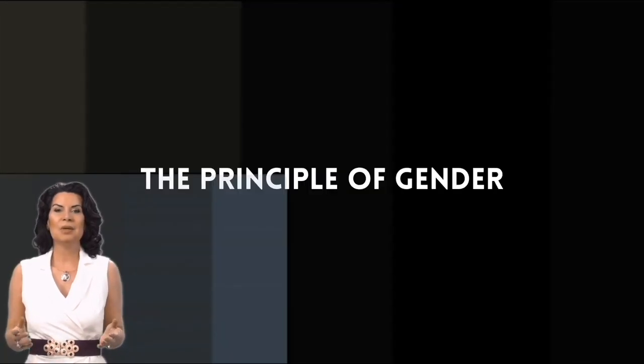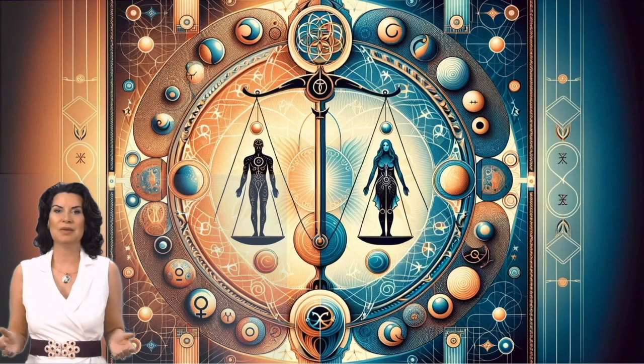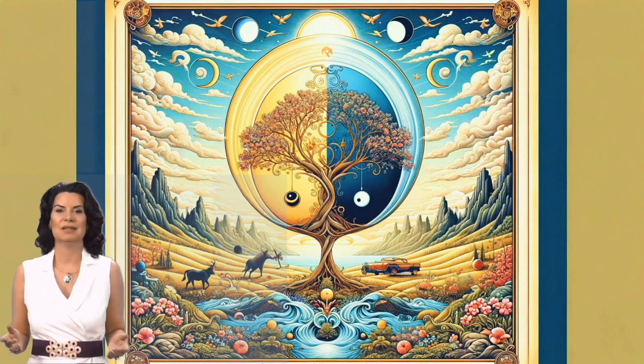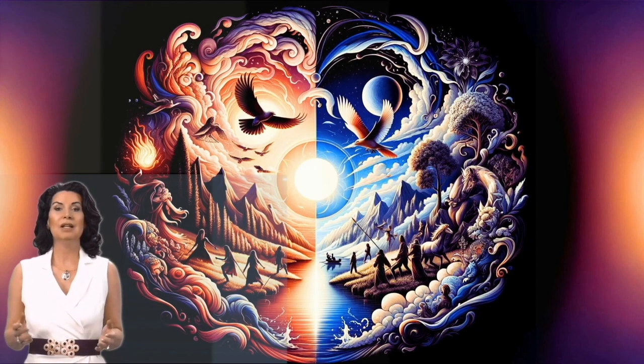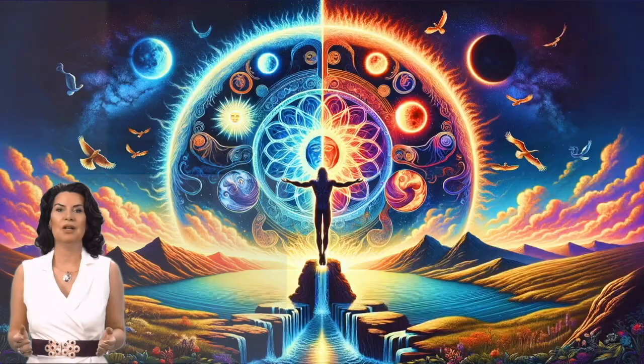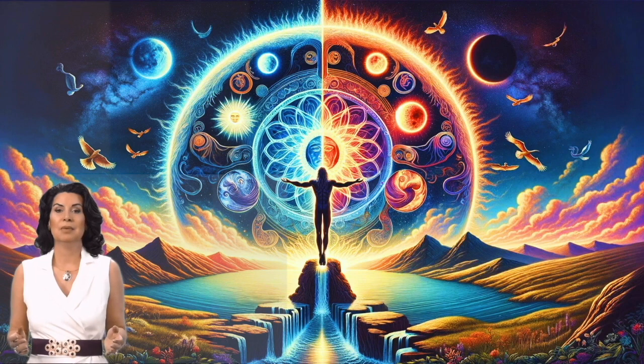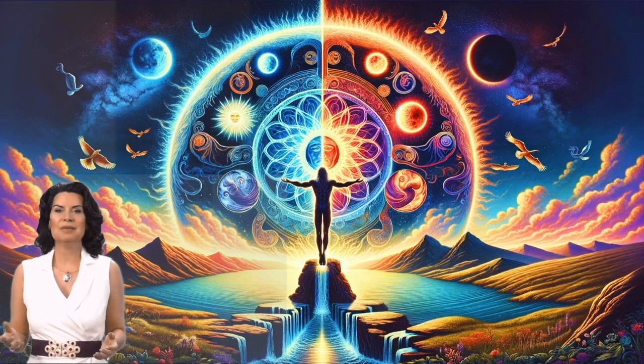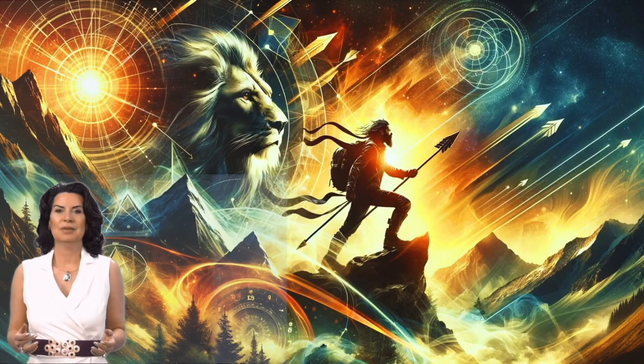The principle of gender. The principle of gender states that everything has its masculine and feminine principles. This manifests on all planes. This principle suggests that gender does not merely refer to the biological differences between male and female, but to the masculine and feminine qualities present in all aspects of life. This principle teaches us about the balance and harmony between the masculine and feminine energies within the universe, nature, and within ourselves.